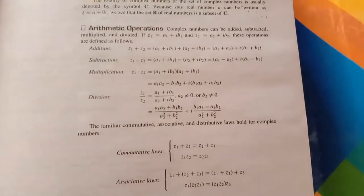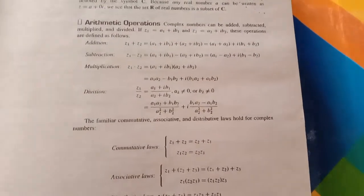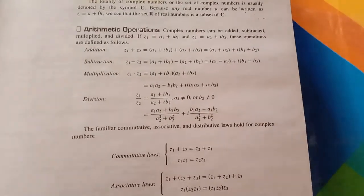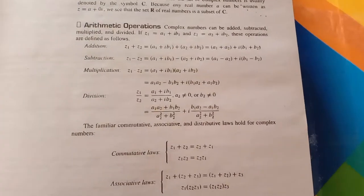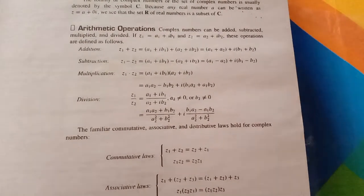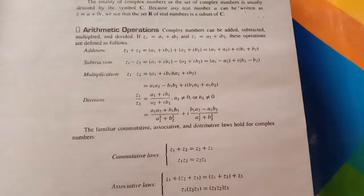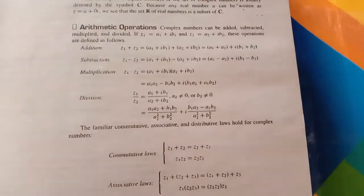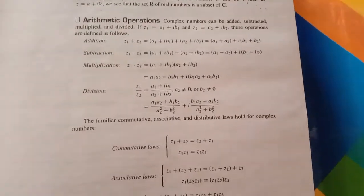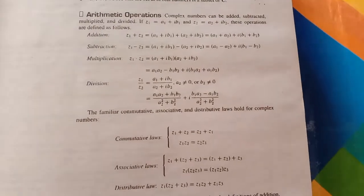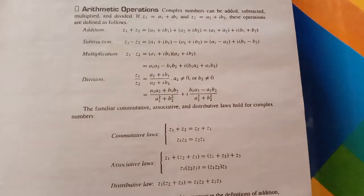To ham kis tarah solve karenge? Ham denominator ke conjugate lenge. Conjugate kise kehte hain ke z2 ke sath z2 mein imaginary part ke sath jo sign hoti hai, kya usko change karo. Iske baad ham next lecture mein commutative, associative, distributive property parenge.